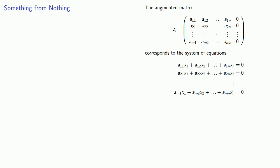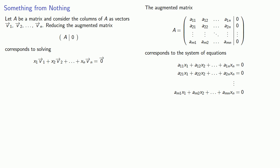And this leads to the following result. Let A be a matrix where we consider the columns of A as vectors V1, V2, and so on up to Vn. Reducing the augmented matrix A, augmented by a column of zeros, corresponds to solving the problem of finding a linear combination equal to the zero vector.